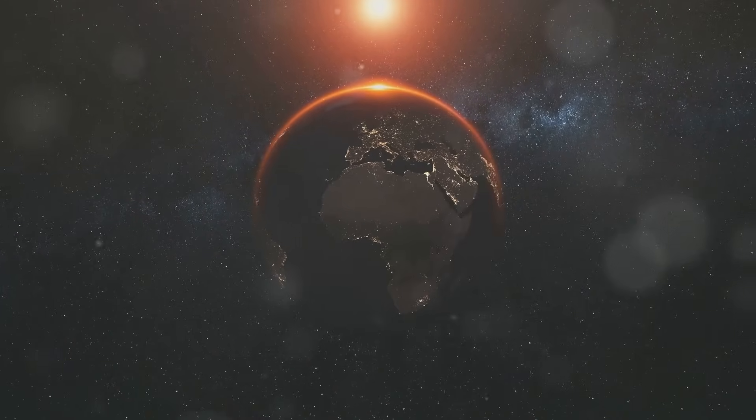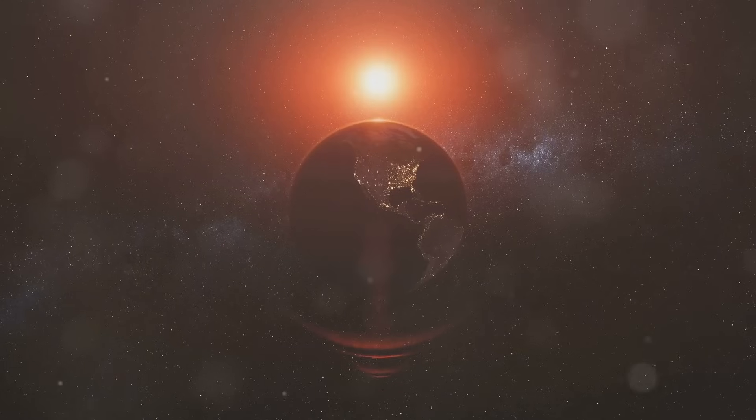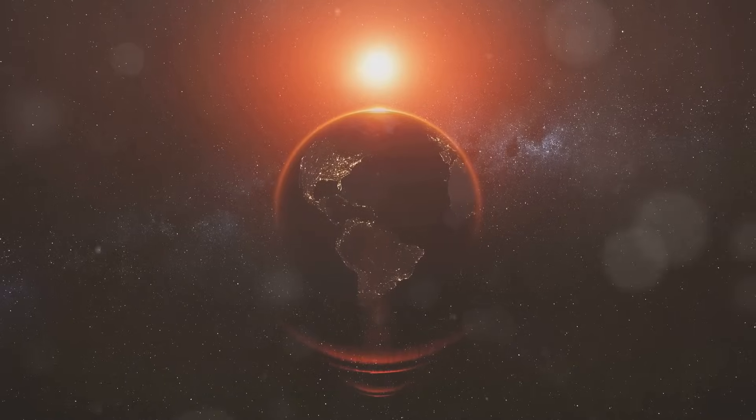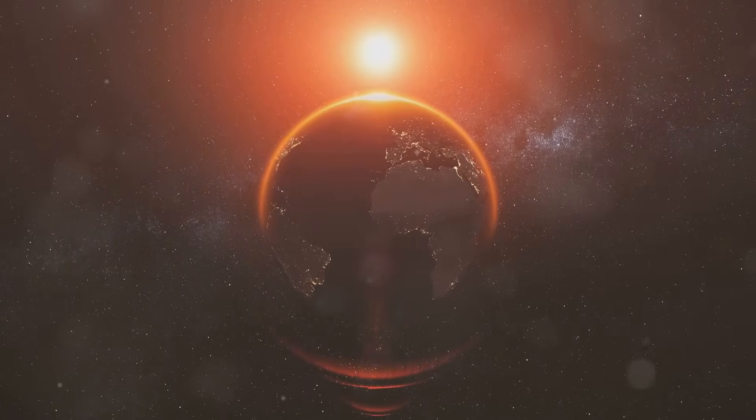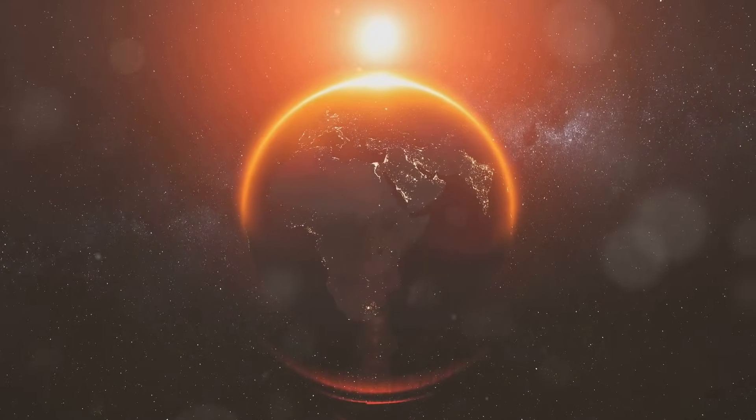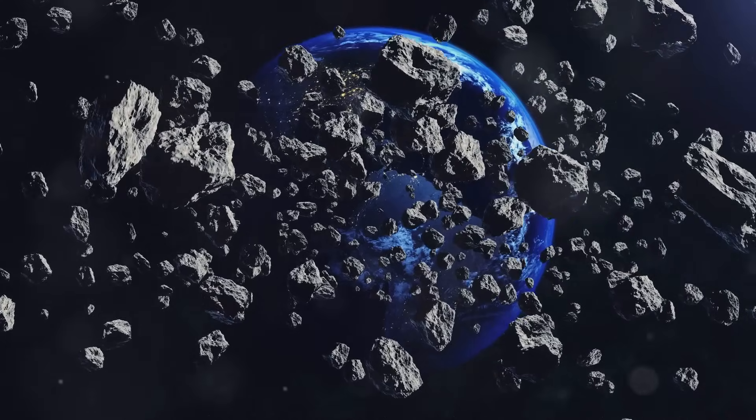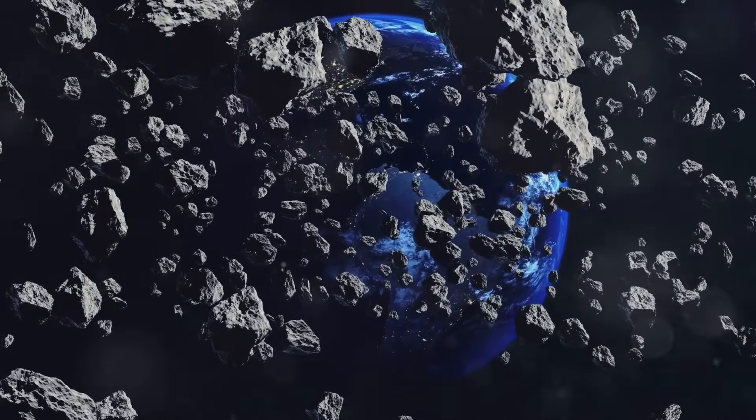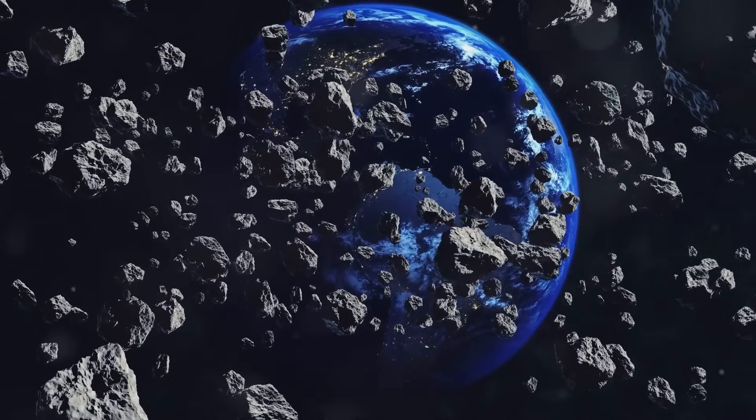It started as a small rocky body, but over millions of years it attracted more and more material, growing larger and larger. This young Earth was a molten, hostile environment, constantly bombarded by asteroids and comets, which contributed to its growth and development.